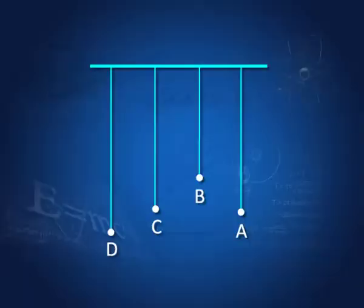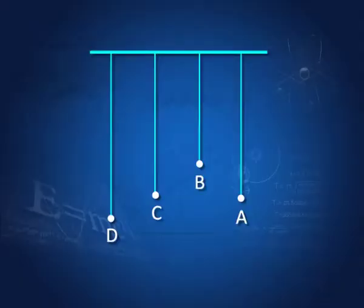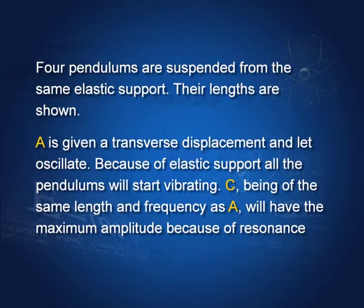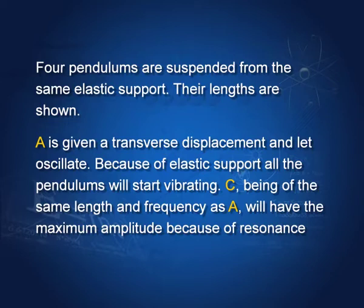Let us take another example of resonance from the exemplar problems for class 11 prepared by the NCERT. We have four pendulums suspended from the same elastic support. The lengths are shown. A is given a transverse displacement and let oscillate. Because of the elastic support, all the pendulums will start vibrating — the energy is transmitted by this elastic support to all of them. However, pendulum C has the same length as pendulum A, and therefore it has the same frequency. So because of resonance, the amplitude of C would be the largest among B, C, and D. Their frequencies match, and therefore pendulum C develops a larger amplitude.